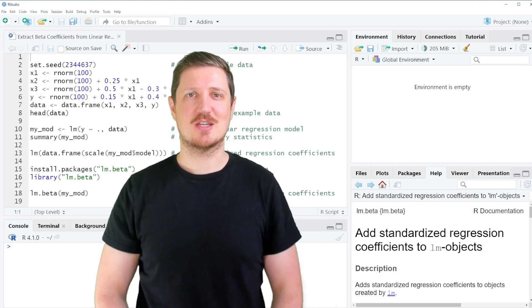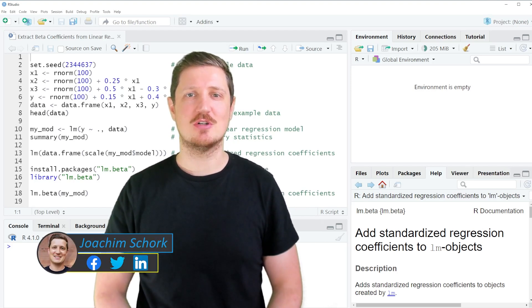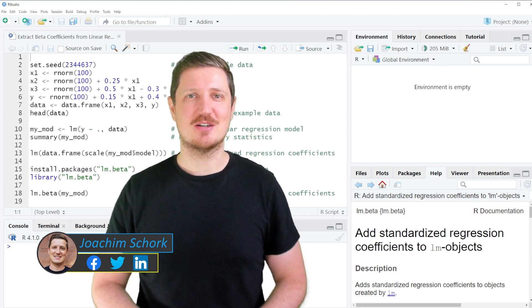This video explains how to extract beta coefficients, also called standardized regression coefficients, from a linear regression model in the R programming language. So without much talk, let's dive into the R code.